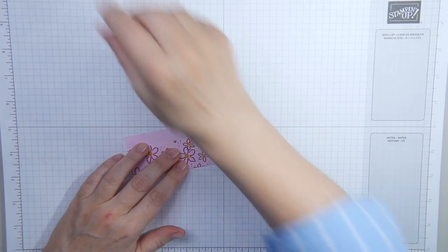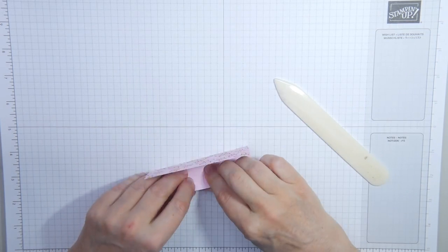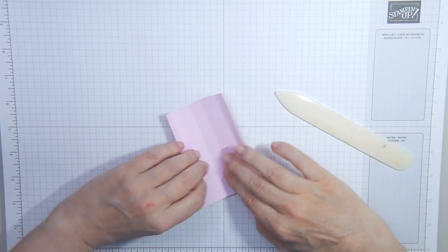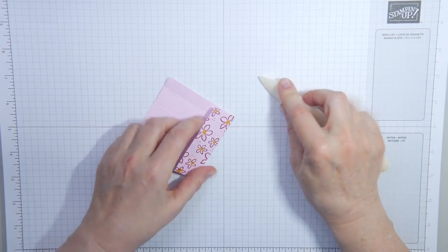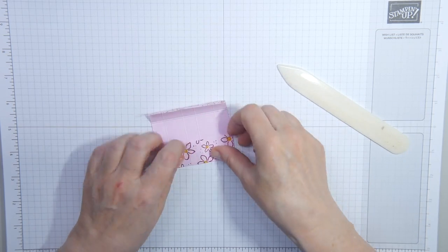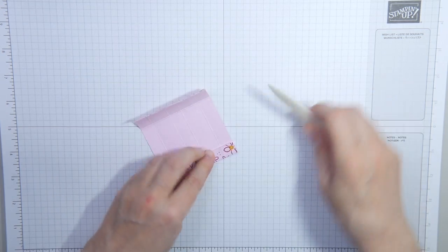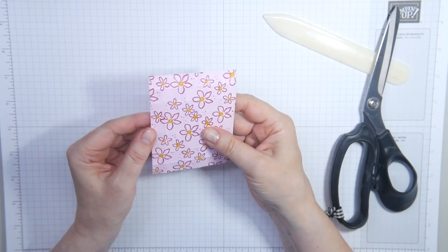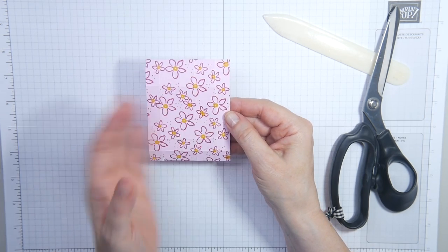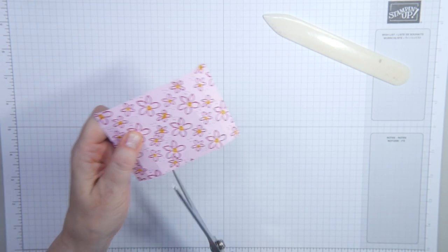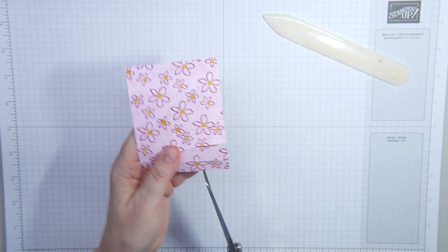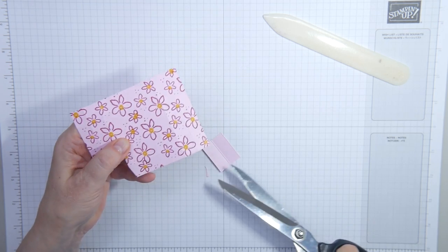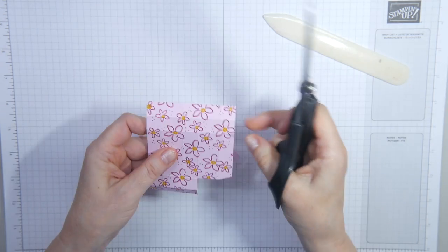I'm going to fold and burnish all these score lines. And I'm making them really flat because it's a tiny box. So I do want the paper to be pliable. It makes it easier to stick the box together. The smaller the project, the stiffer the paper seems to be. So I've folded and burnished all these score lines. Now I'm going to cut.